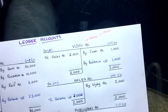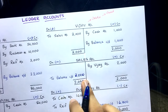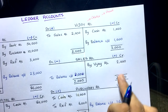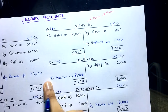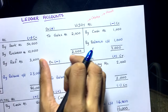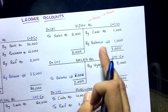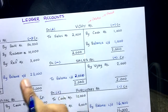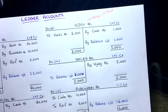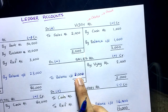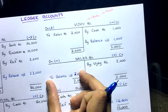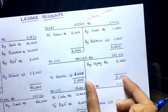For the Sales Account: only 2,000 on the credit side, nothing on the debit side. Credit side is bigger, so write 2,000 on both sides, balance carried down 2,000. This means we have made total sales of 2,000 in this period. Sales is income with a credit balance — the closing balance appears on the debit side, but in the next period it will go to the credit side as 'balance brought down.'